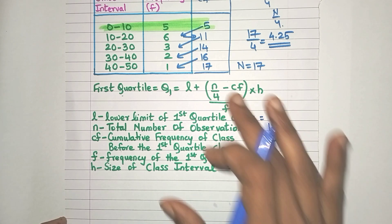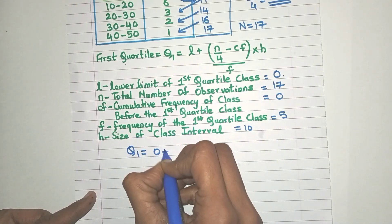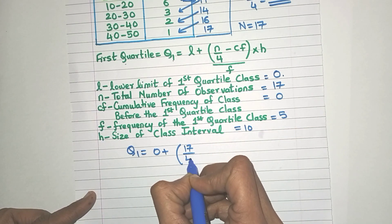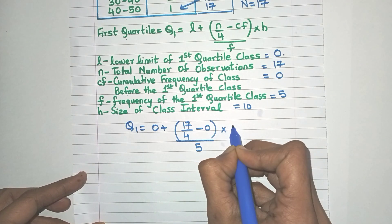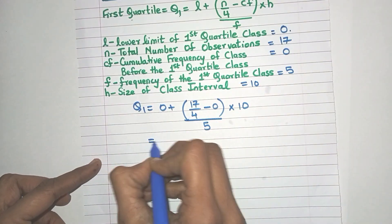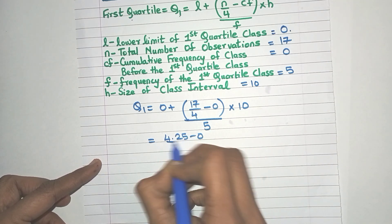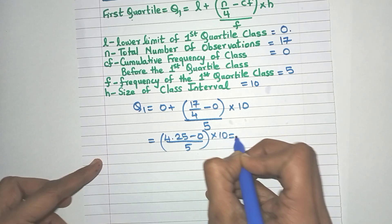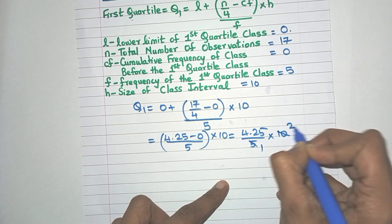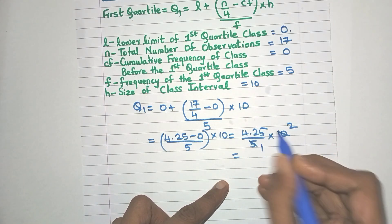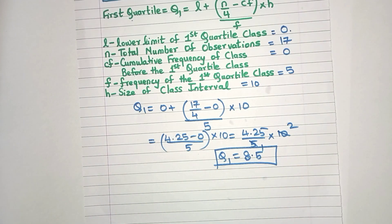h is the size of the class interval — subtract the lower limit from the upper limit of any class interval, for example 30 minus 20 equals 10, so the class size is 10. Now substituting into the formula: Q1 = 0 + (17/4 − 0) / 5 × 10. That gives 4.25 × 10 / 5. Cancelling, 4.25 × 2 = 8.5. So Q1 is 8.5.